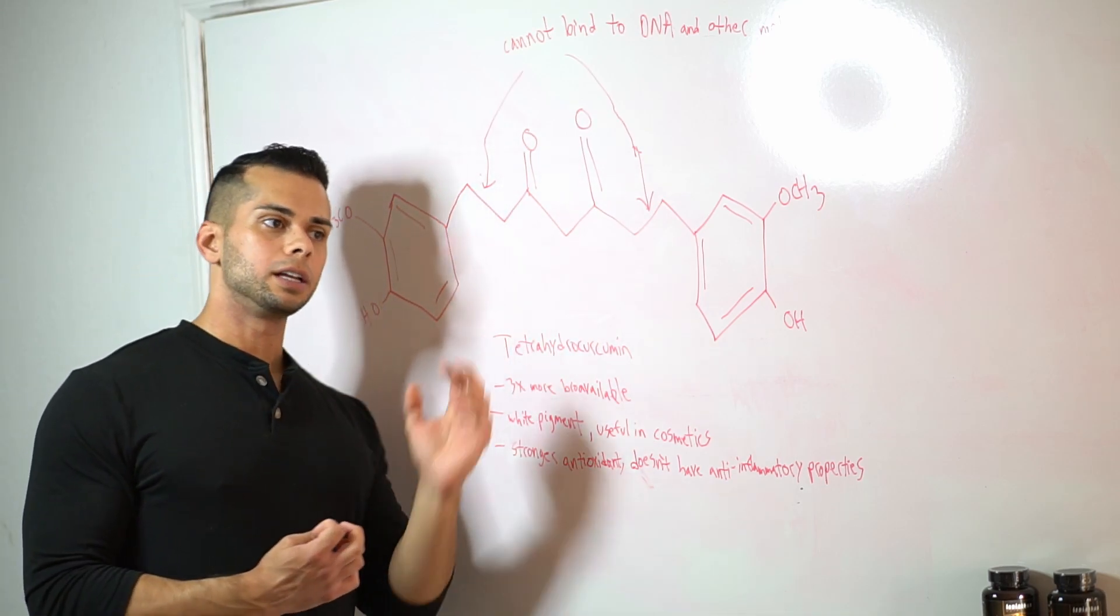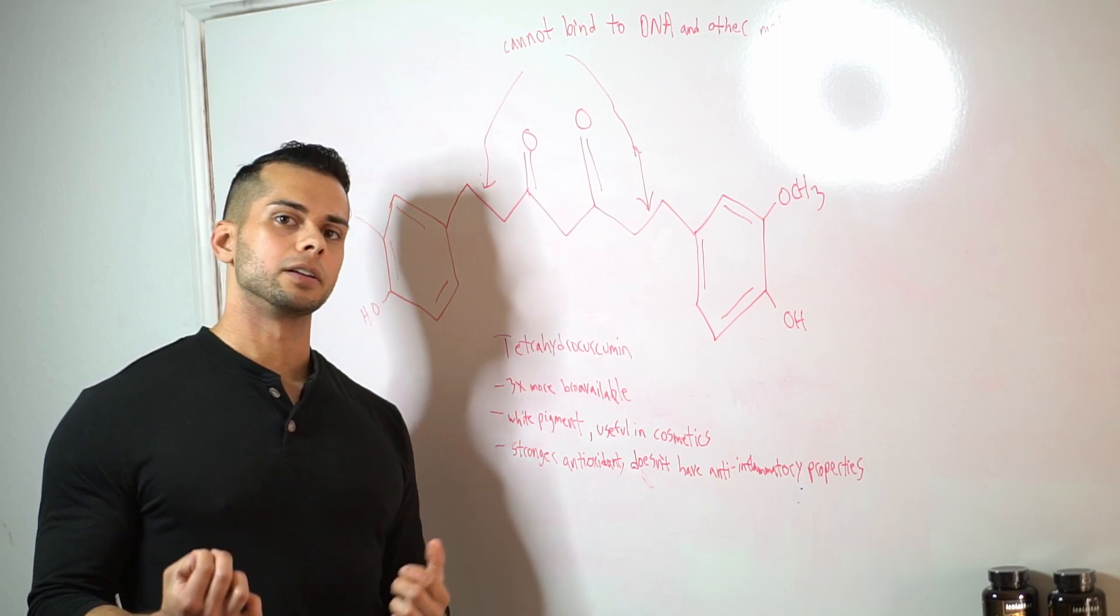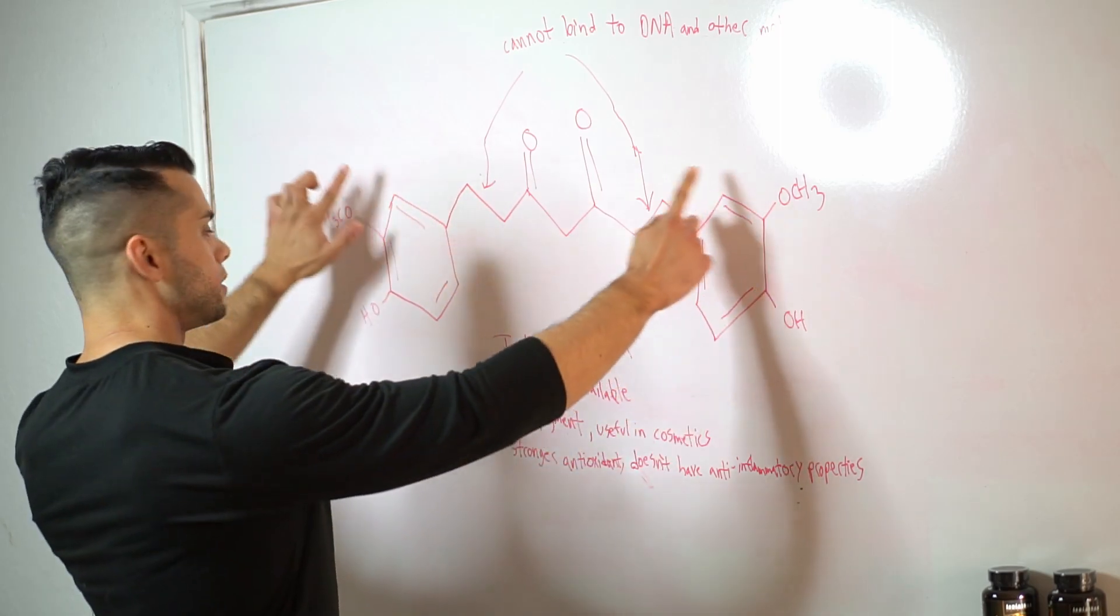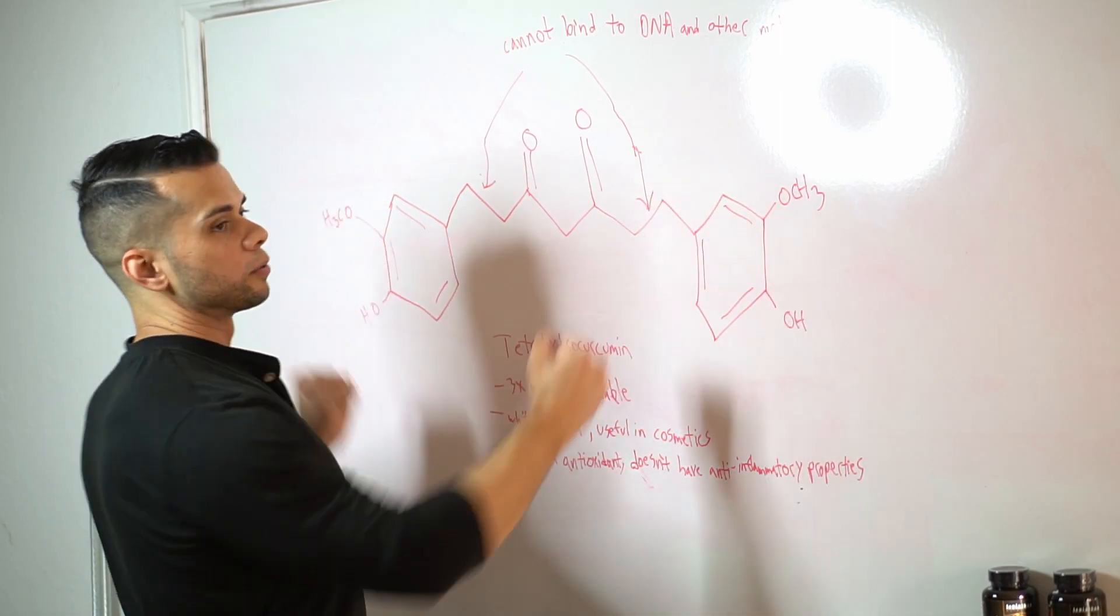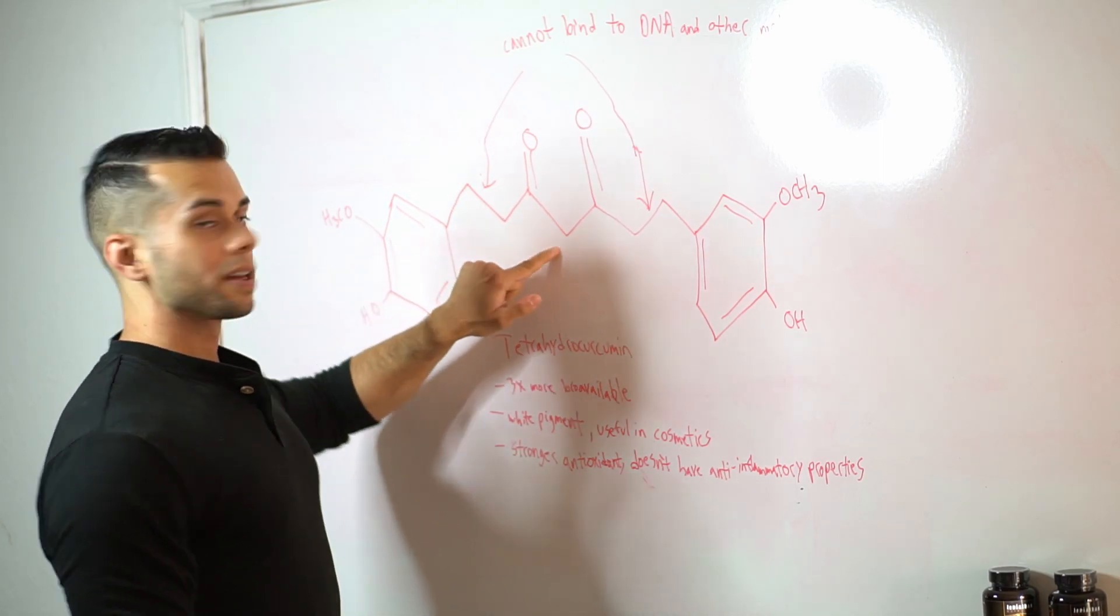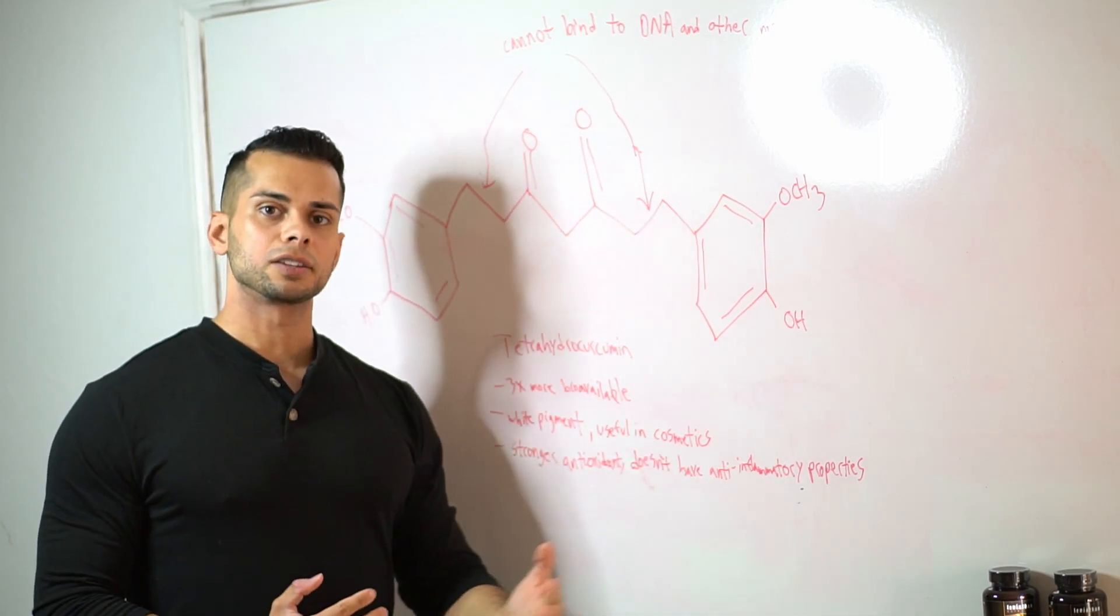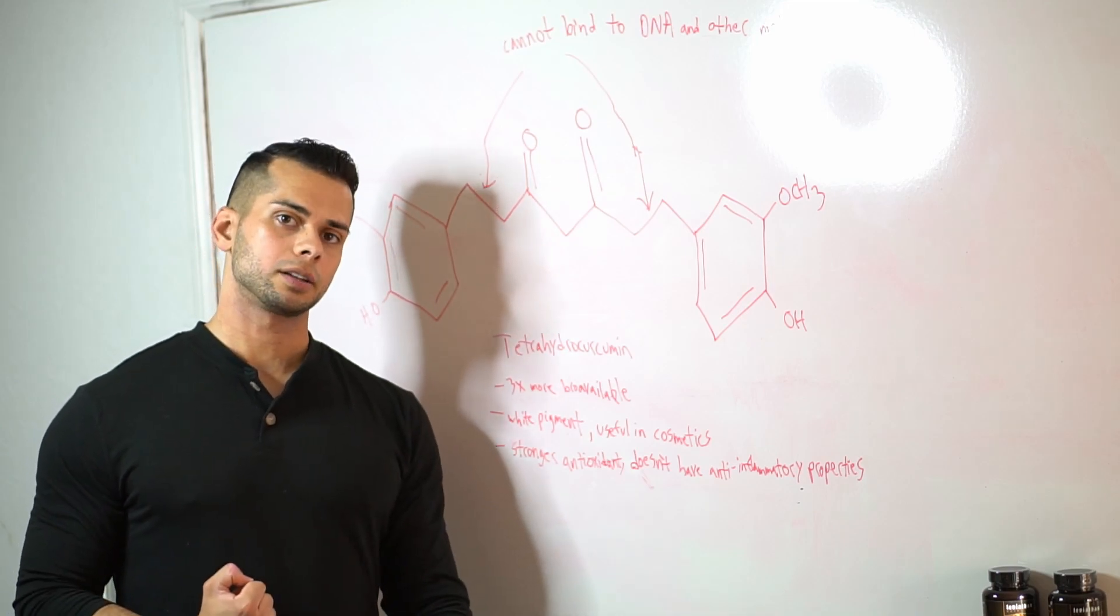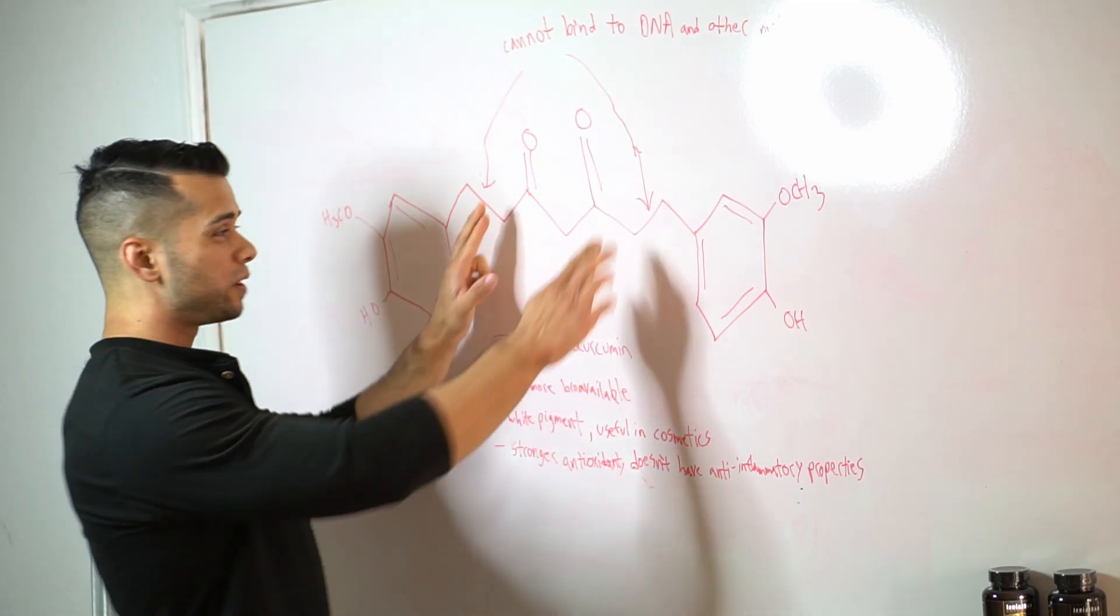phenoxy groups over here as well as this methylene group. So those are still retained in the structure so we see those antioxidant effects still, but with these reduced double bonds we also lose the ability for this structure to bind to many of the enzymes and molecules in the human body such as DNA.